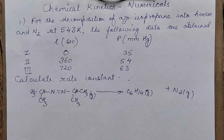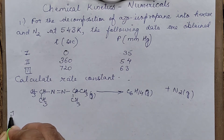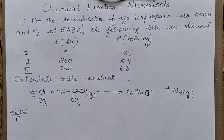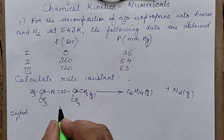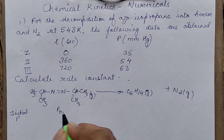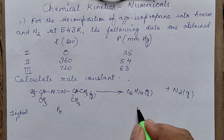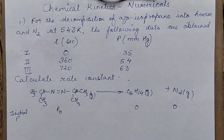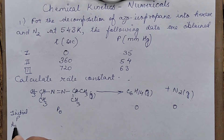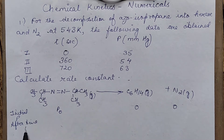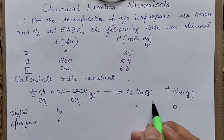We follow the equilibrium approach. Set initial pressure as P₀, with product pressures at 0. After time T, as per the coefficients — 1 mole reacts to give 1 mole each of products — if P reacts, P of hexane and P of nitrogen are formed.